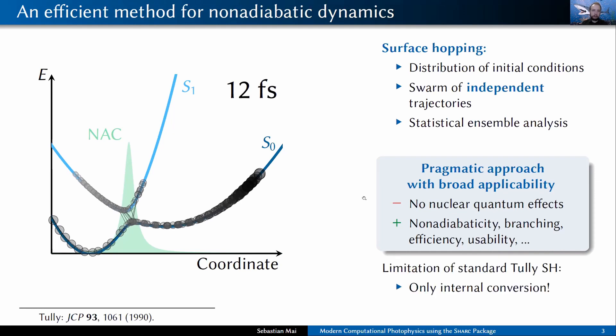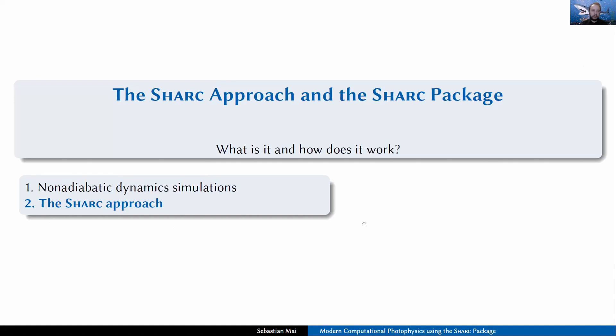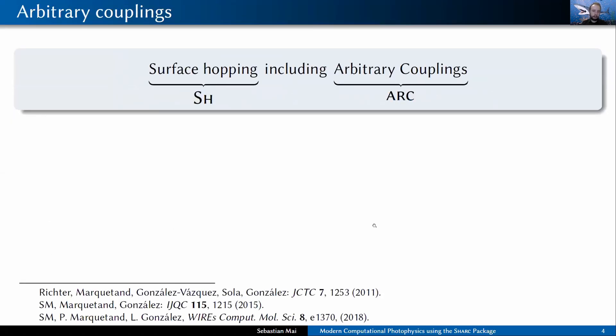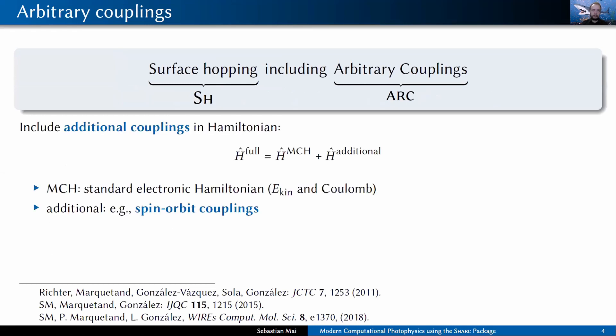The traditional surface hopping that was proposed many years ago had one big limitation that we wanted to overcome, and this was that it's limited to internal conversion. That's why, like 10 years ago, the SHARC approach was developed. The general idea is that we do surface hopping including any arbitrary kind of couplings. In order to do so, we need to add additional coupling terms to our electronic Hamiltonian, or to the molecular Hamiltonian, because you need to have these couplings inside the Hamiltonian to describe any process that you're interested in.